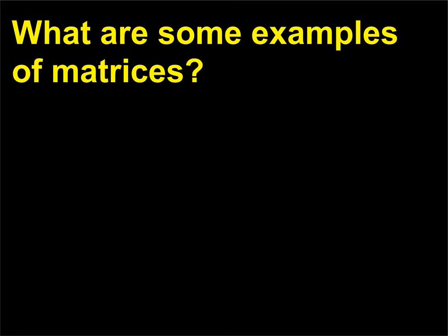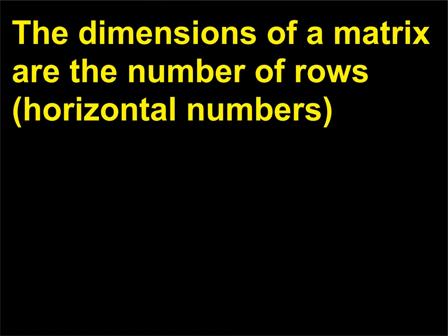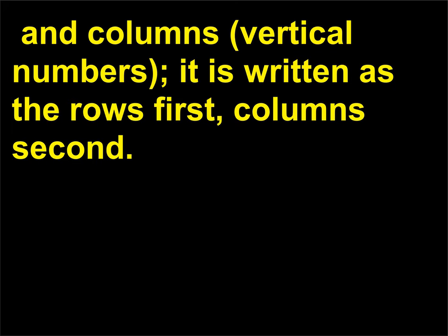What are some examples of matrices? The dimensions of a matrix are the number of rows (horizontal numbers) and columns (vertical numbers); it is written as rows first, columns second.